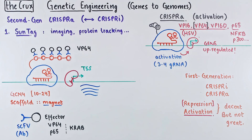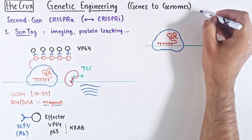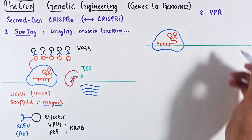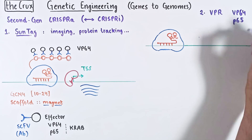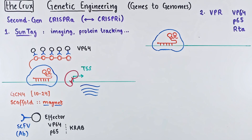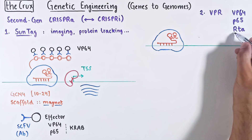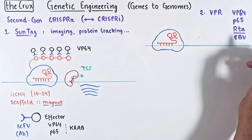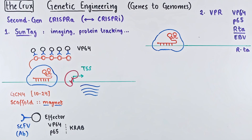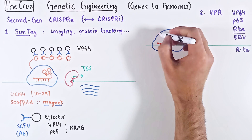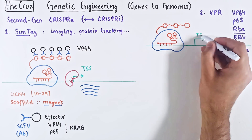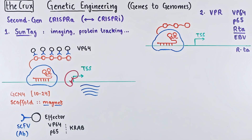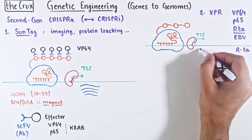Another approach, a simpler one, uses VPR, which is a concatenation of three proteins: VP64, P65, and RTA. You've seen the first two. The third one is from the Epstein-Barr virus protein R — we take the transactivating domain from that protein, so we call it RTA. You can fuse this chain to the end of dCas9, and now you have a powerful second-generation CRISPR-A system.